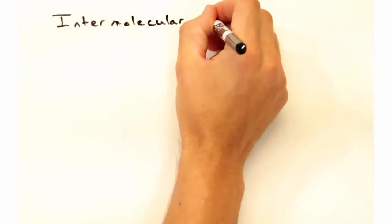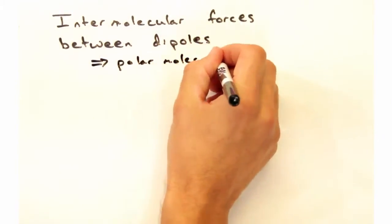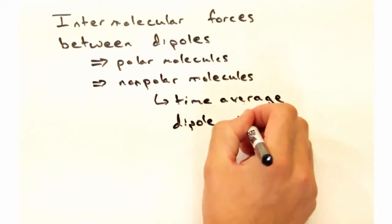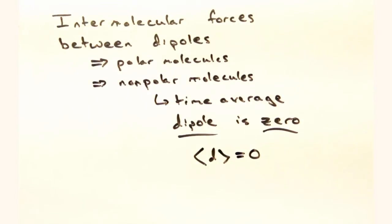You mean like those between two polar molecules? Yeah, polar molecules certainly possess dipoles. But let's start by taking a look at two nonpolar molecules first. But nonpolar molecules don't have dipoles. How can they interact?